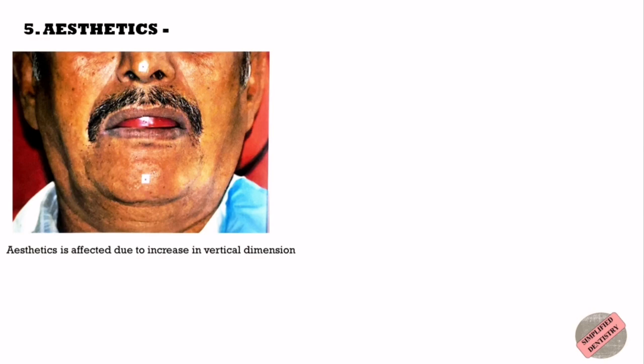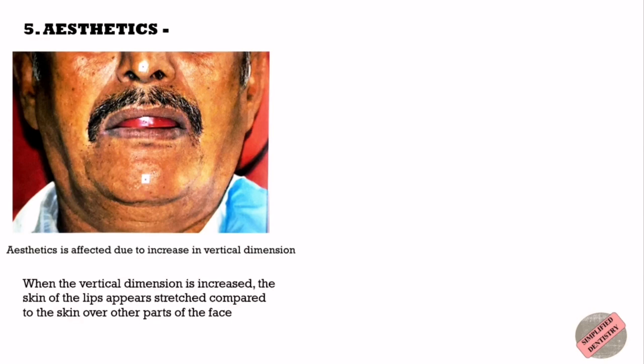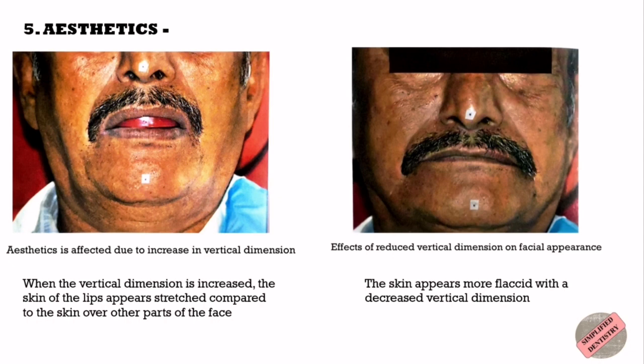The fifth physiologic method is aesthetics. The vertical dimension also affects aesthetics: when the vertical dimension is increased, the skin of the lips appears stretched compared to the skin over other parts of the face, while the skin appears more flaccid with a decreased vertical dimension. The contour of the lips is also distorted with a change in vertical dimension. The same problems can occur if the labial contour of the occlusal rims is incorrect, so the labial contour should be developed and verified individually before evaluating vertical relations.